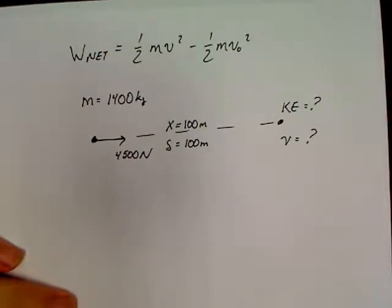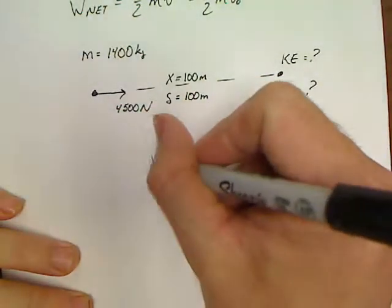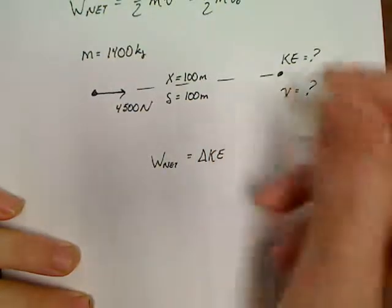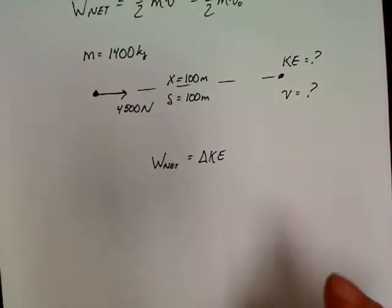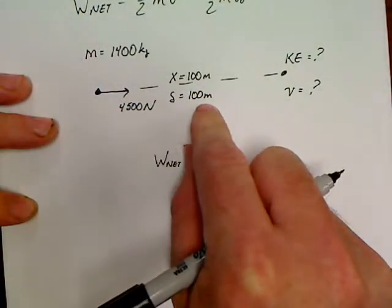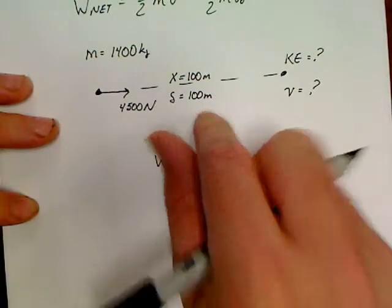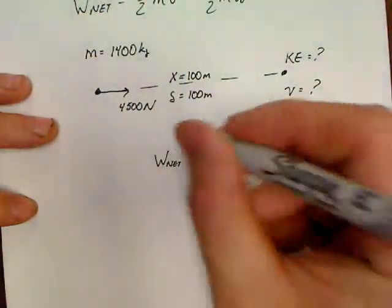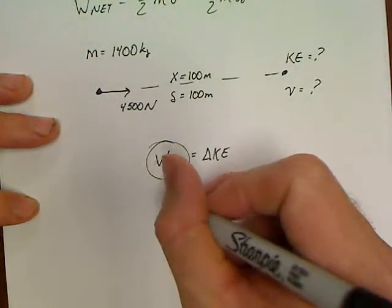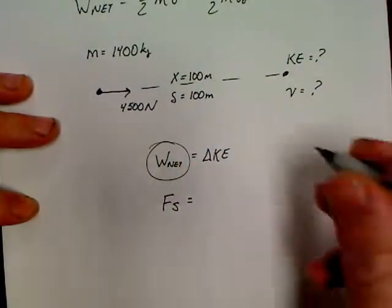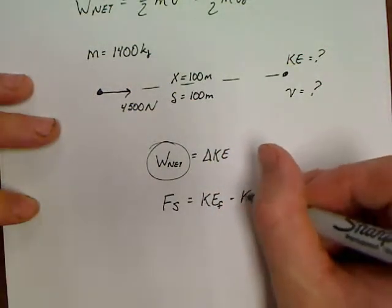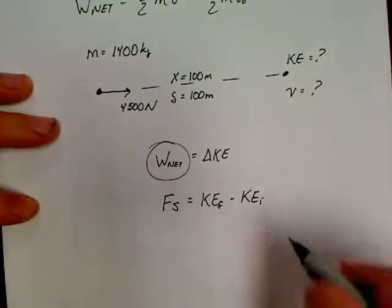Well, let's just go back to this. Work net is equal to delta KE. So, work is equal to a change in kinetic energy. Well, look at what it gives you. It's giving you a force and a distance. Well, that is work. If you remember, work is equal to Fs. So, all we've got to do is replace work net with Fs, and make that equal to, and if you want to, we can write it like this. KE final minus KE initial. Now, here's the thing. Initial velocity was zero. So, Vo is a zero.